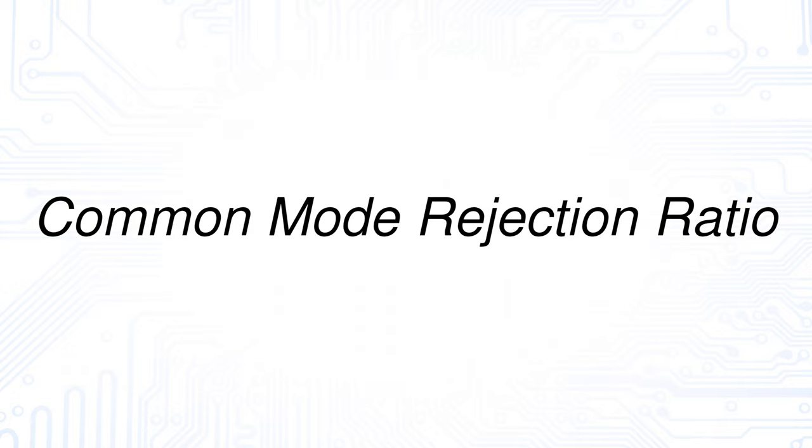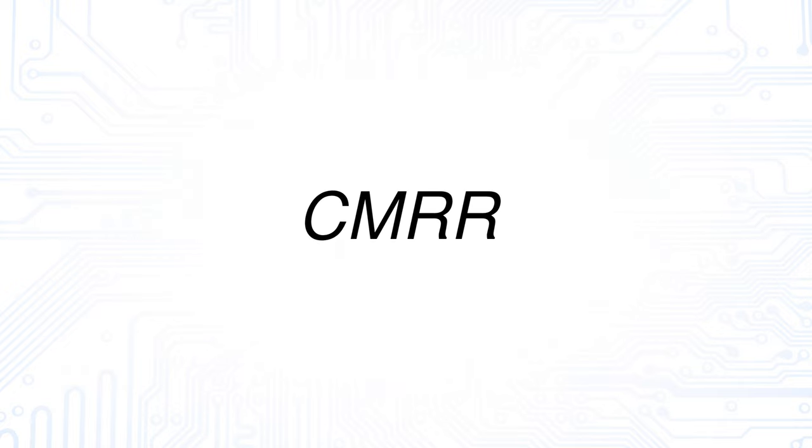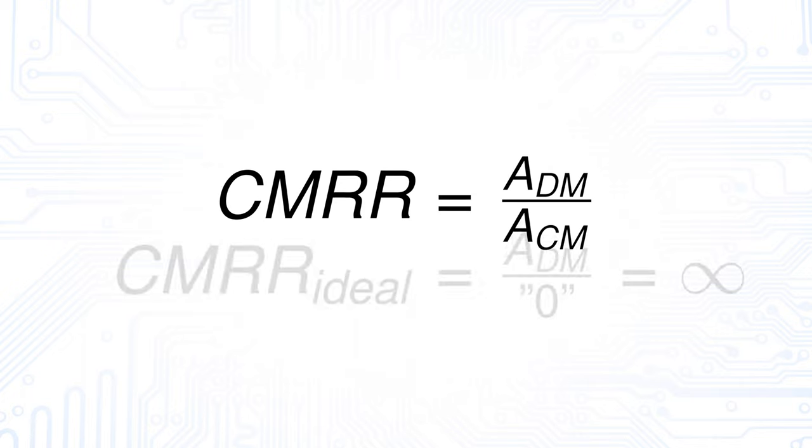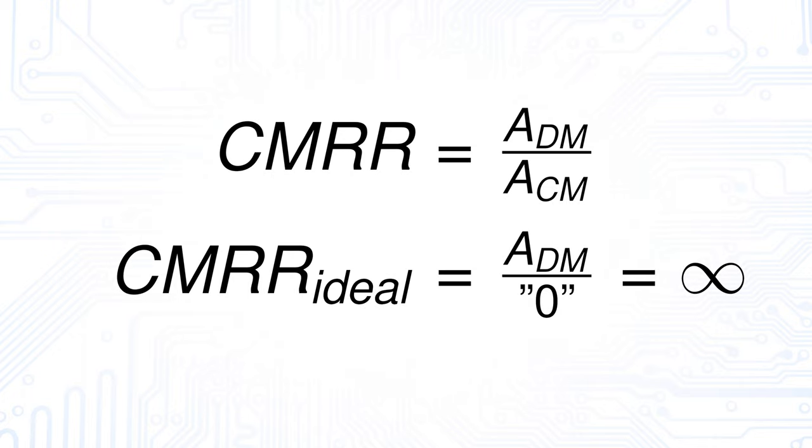To do so, we should always check for the so-called common mode rejection ratio of our differential amplifier. The common mode rejection ratio is calculated by putting the differential mode gain and the common mode gain in relation. The result gives us a ratio that shows how well common mode signals are suppressed while differential mode signals are amplified. It is infinite for an ideal differential amplifier where the common mode gain is zero.